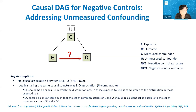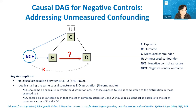A negative control exposure is a variable that is not causally related to the study outcome, but shares the same potential causal bias with the exposure. Therefore, in this diagram, there is no arrow from NCE to O, but all arrows from U to E will also point to NCE. Under these assumptions, if we repeat the analysis for the association between NCE and outcome, and if a non-null association is observed, this may suggest that unmeasured confounding is influencing the result.